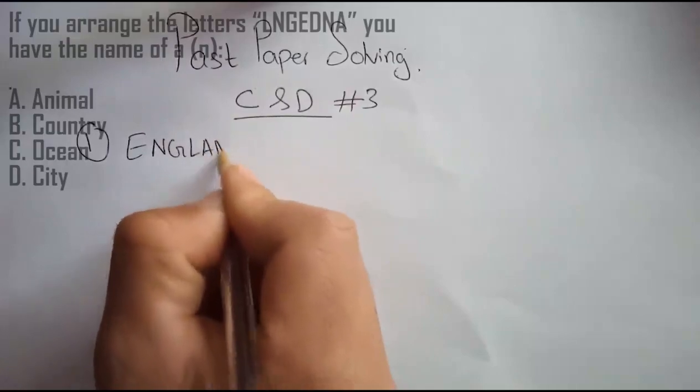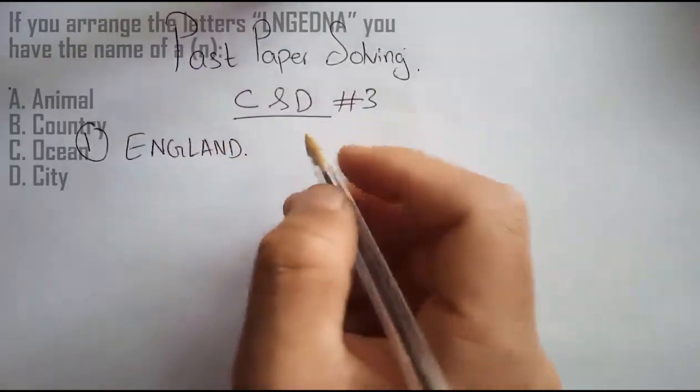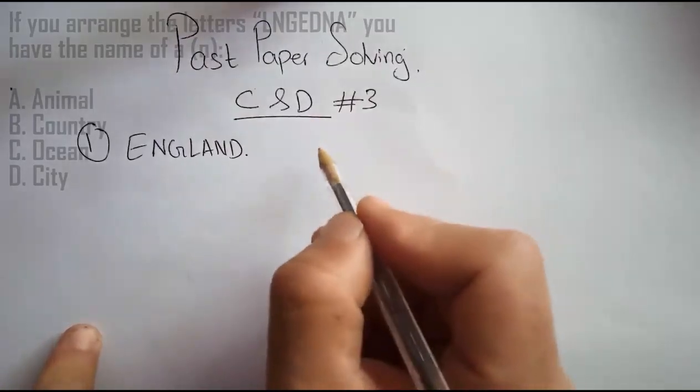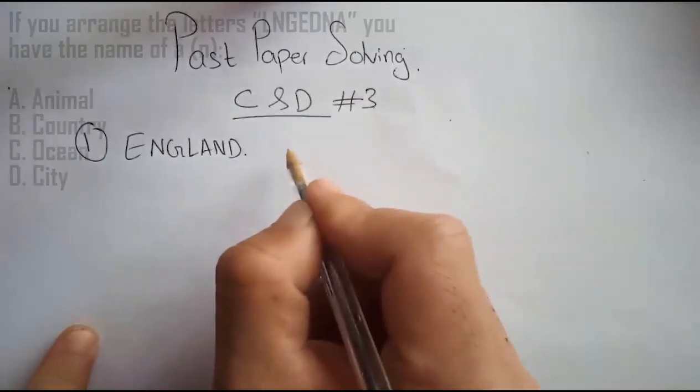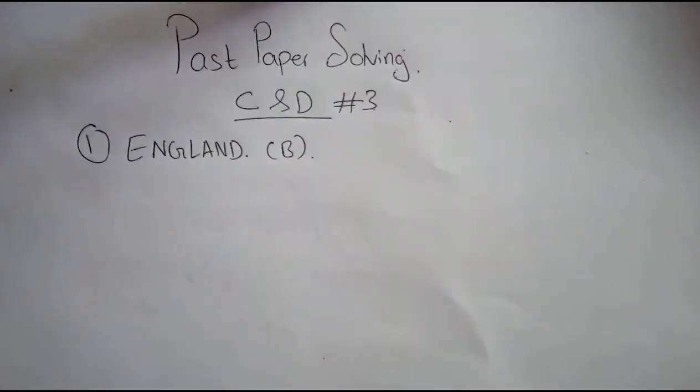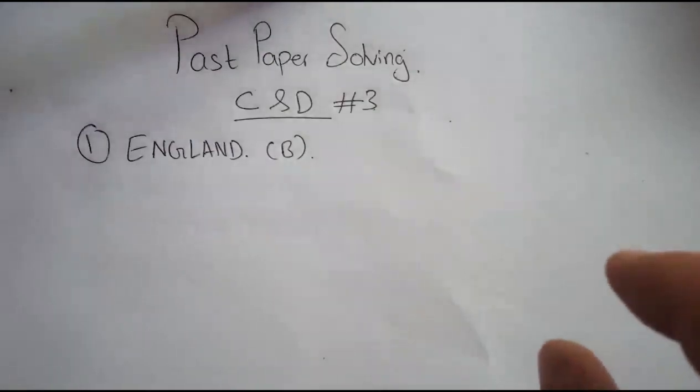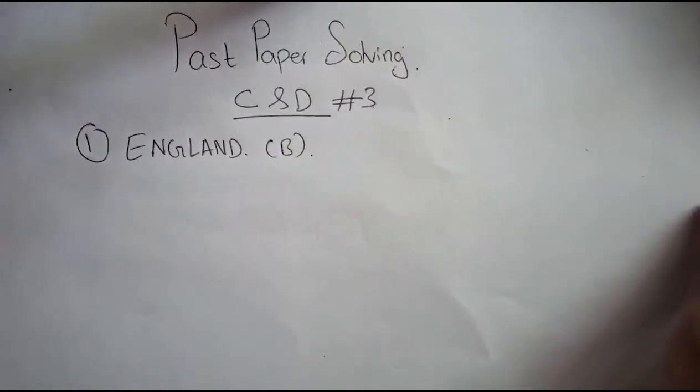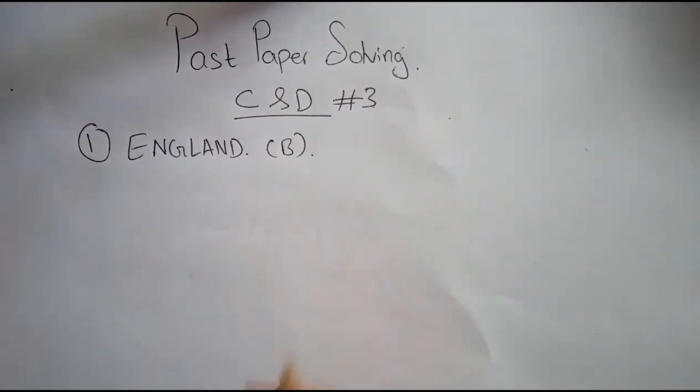The answer is E-N-G-L-A-N-D, which is England. The correct option is B, country. With vocabulary practice, you need to be able to rearrange the letters to find meaningful words.